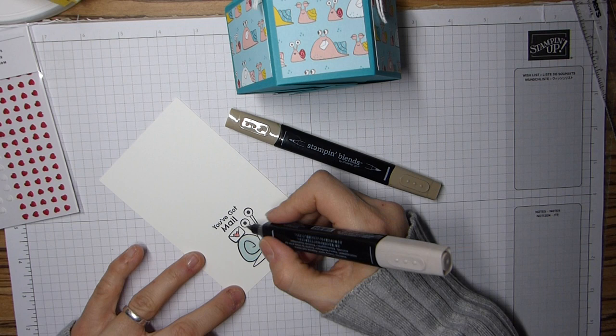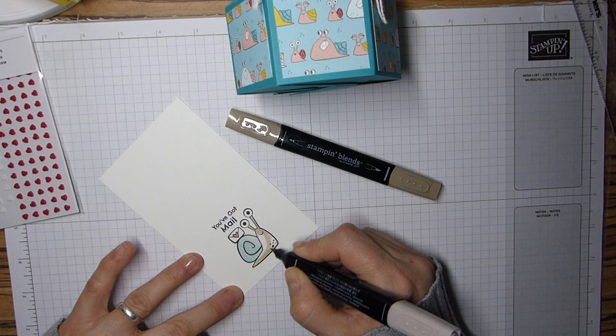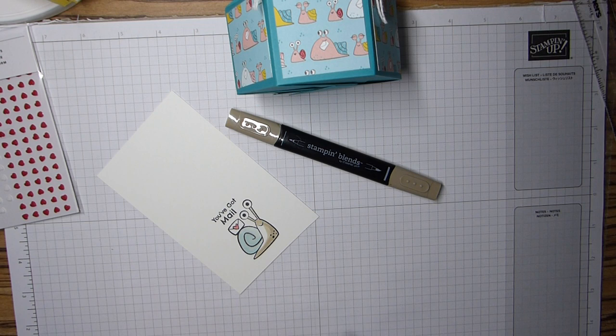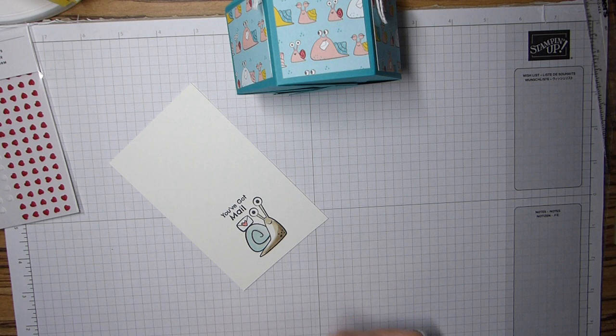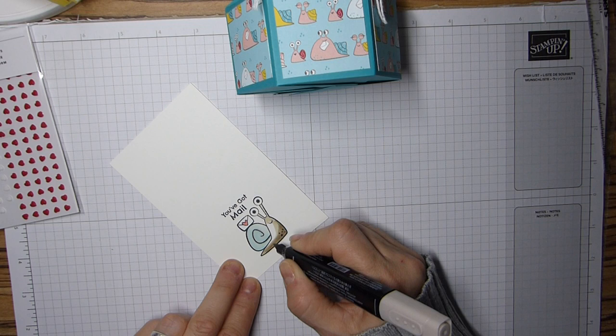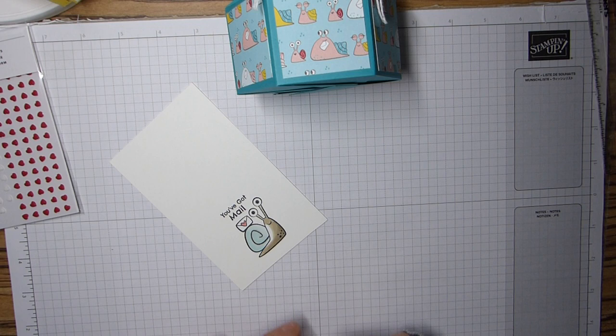And then the last bit was Mr. Snail himself, and I used my crumb cake blend here. So light crumb cake and I literally just did a little bit, then the dark again, I'm just kind of going for the shaded effect here. Back in with my light to blend that in. I'm going to leave him at that I think.